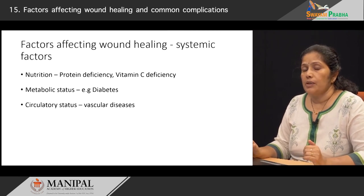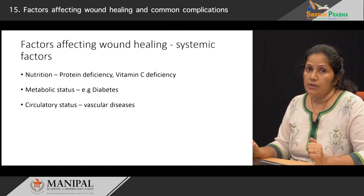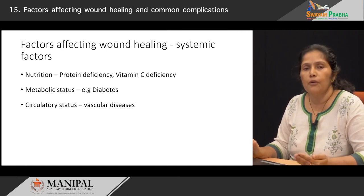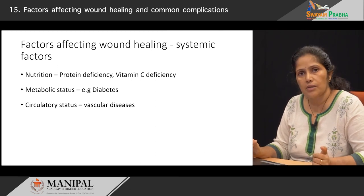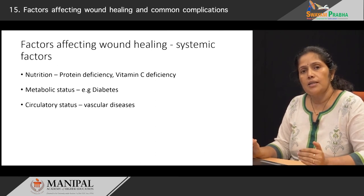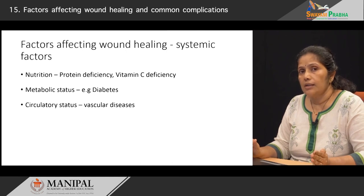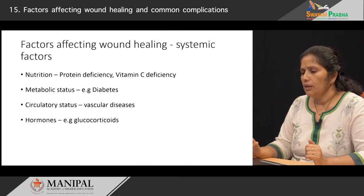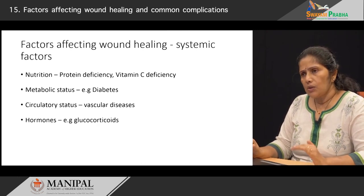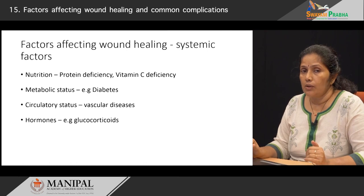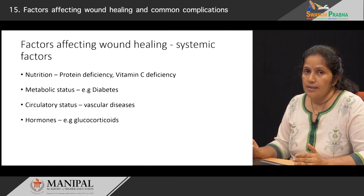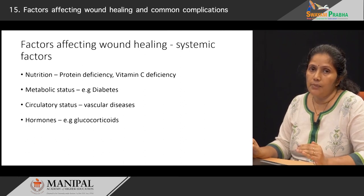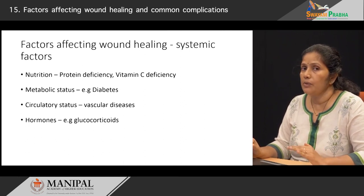Also, the circulatory status of the patient must be kept in mind. If the patient is suffering from certain vascular diseases which prevent good blood flow to the area — for example, if there is atherosclerosis in the vessels — such diseases will also result in slow healing of injuries. We must also keep in mind that certain hormones like glucocorticoids, if present in excess, can delay the healing of wounds because they prevent the inflammatory process.